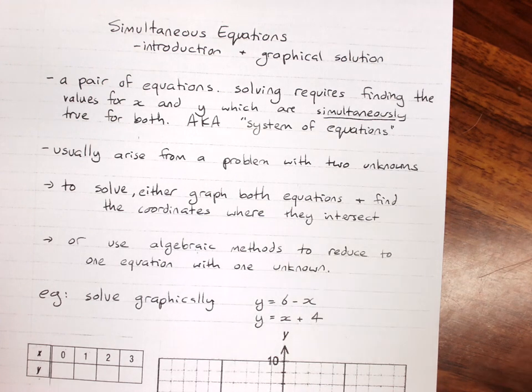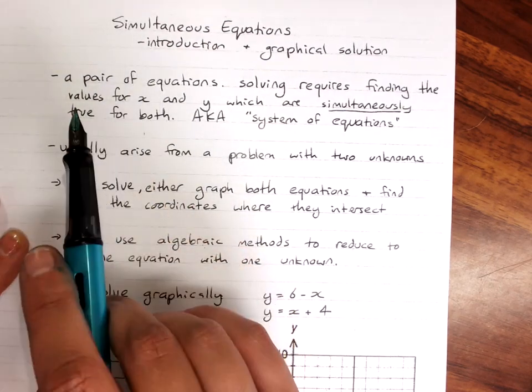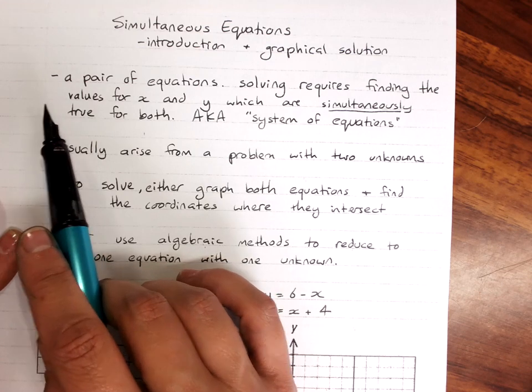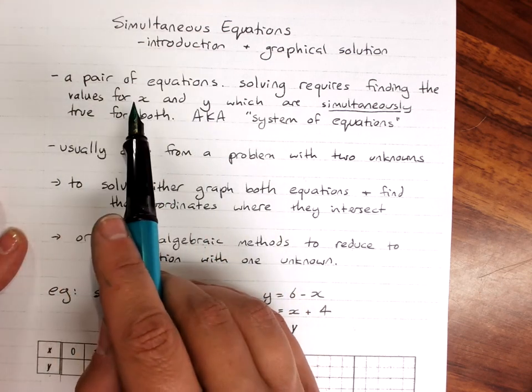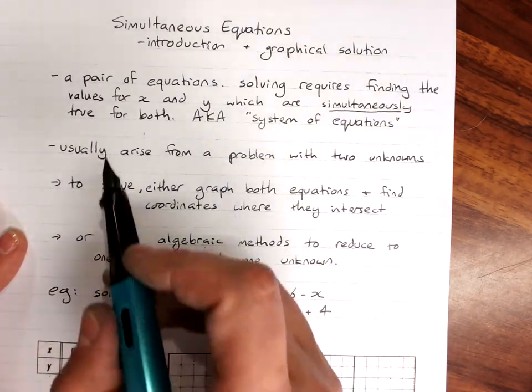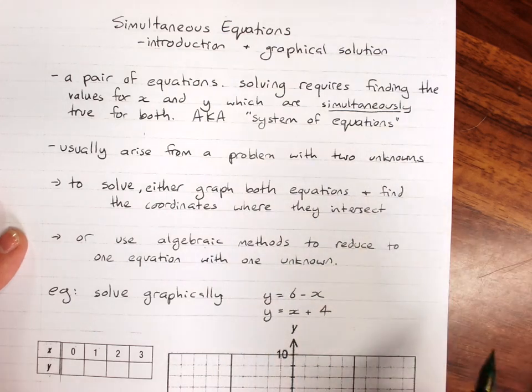Simultaneous equations: an introduction and solving graphically. Very quickly, simultaneous equations are when we have a pair of equations, and solving those requires finding the values for x and y which are true at the same time for both, or simultaneously. They're also known as a system of equations.